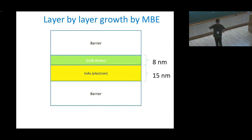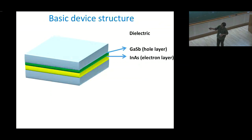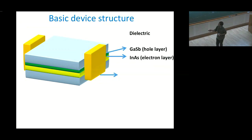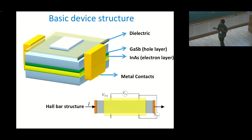You can see the indium arsenide and gallium antimonide layers. We put metal contacts to measure the conductance, and we can tune the conductance by applying a gate from the top to tune the Fermi level. We make a Hall bar device to measure the longitudinal resistivity and the Hall resistance simultaneously, so we can get the carrier density of this material.